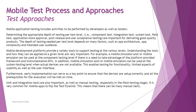Mobile application development platforms provide a variety of tools to support testing at various levels. For example, a mobile simulator or emulator can be used at the component testing level if there is a need to take advantage of the platform-provided framework and instrumentation APIs. In addition, mobile simulators and emulators can be used at the system testing level when actual devices are not available, in order to reduce cost — though for critical testing, real devices are preferred. This enables testing for functionality and limited aspects of usability and user interface.